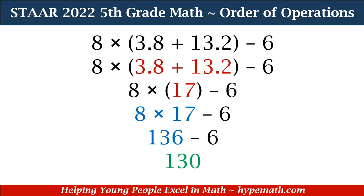We have 8 times, in parentheses, 3.8 plus 13.2, closed parentheses, minus 6. We tackle our parentheses first: 3.8 plus 13.2 equals 17. Now we multiply, since there's no exponent. We have 8 times 17, which equals 136. So our expression becomes 136 minus 6.